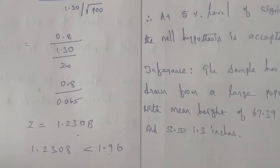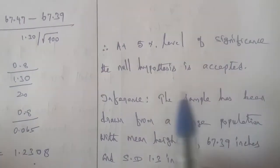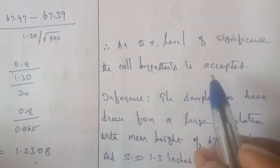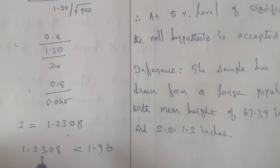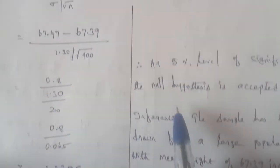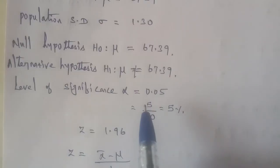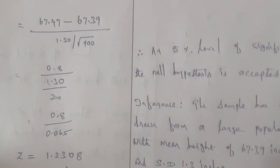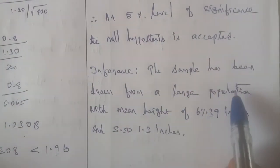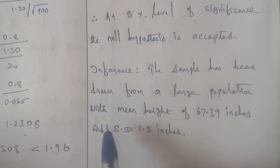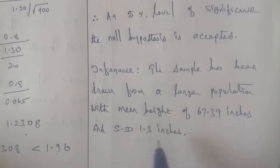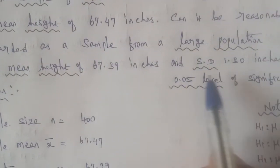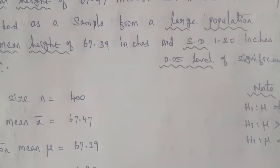Therefore, at 5% level of significance, the null hypothesis is accepted. That is the conclusion: the sample has been drawn from a large population with mean height of 67.39 inches and standard deviation of 1.3 inches. So this is the answer.